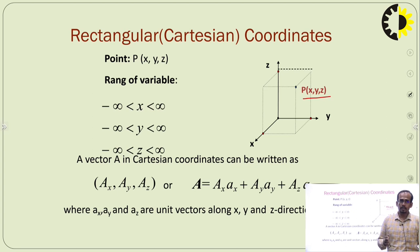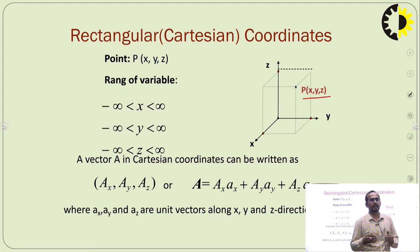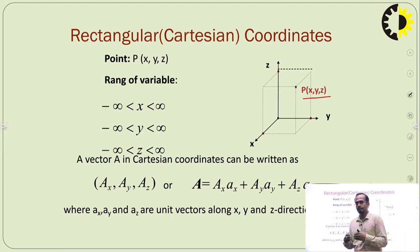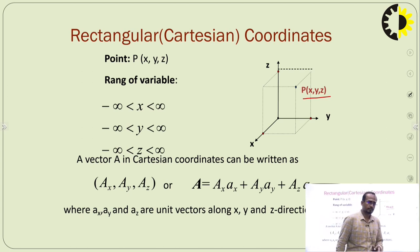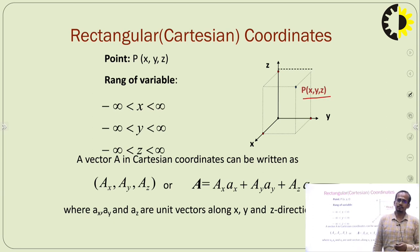What is the range of these variables? The x, y, and z coordinates can vary from minus infinity to plus infinity. We can also find the differential elements, differential surface, and differential volume from these coordinates.